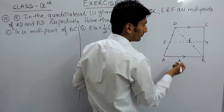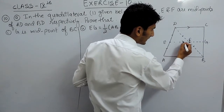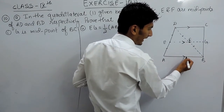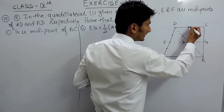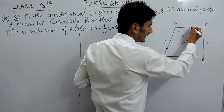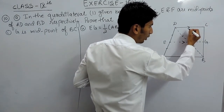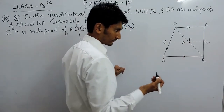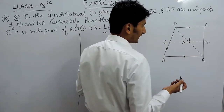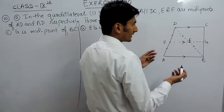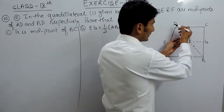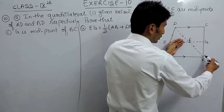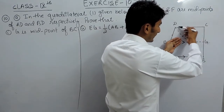We have proved that EF is parallel to AB, and AB is given parallel to DC. So all three lines — EF, AB, and DC — are parallel to each other. Now let's talk about another triangle, which is triangle DBC.